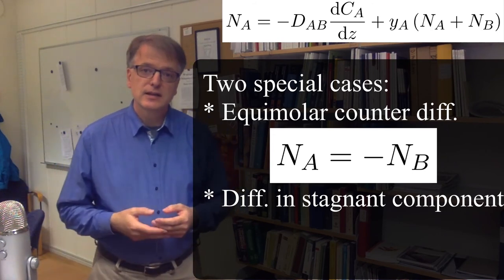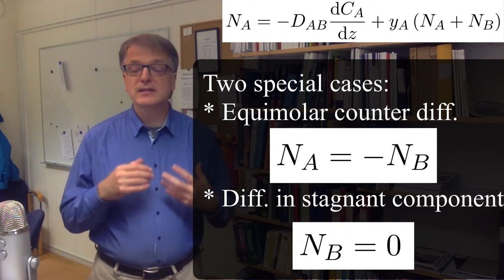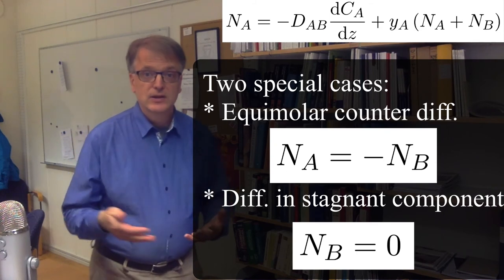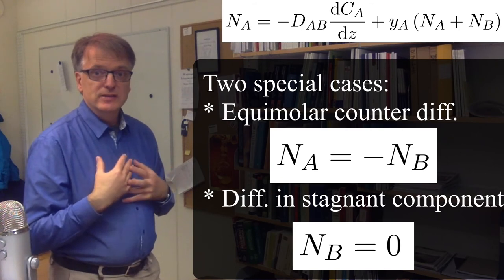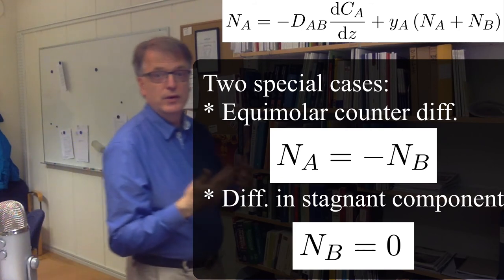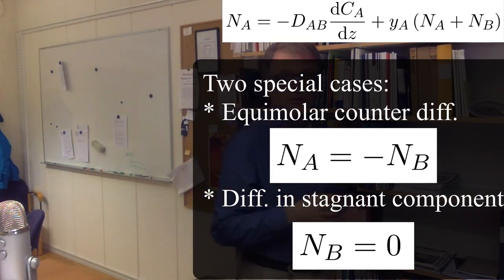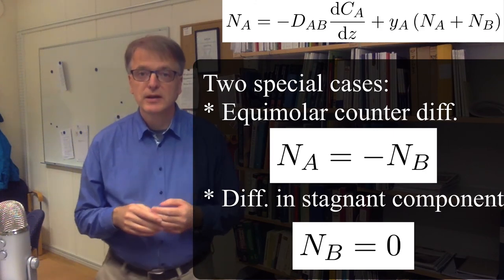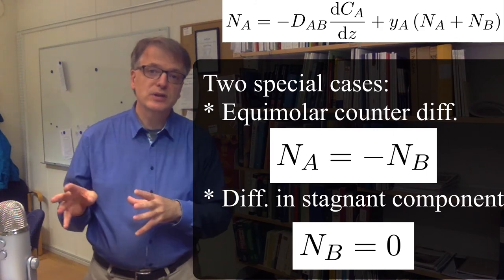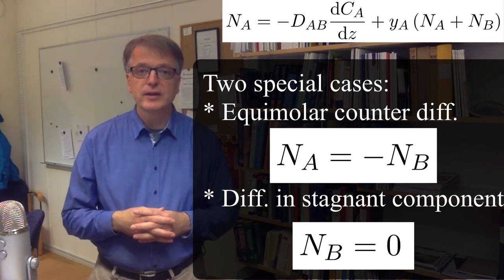The other case is when one component is standing still. So you have something like the air here, for example, and you have some molecules that move through the air and the air doesn't move. And that's diffusion in stagnant component. And we will look at these two special cases in two separate videos.